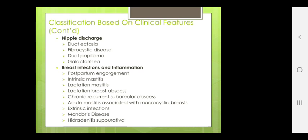Classification based on clinical features also includes nipple discharge and breast infections and inflammation. Nipple discharge may be in duct ectasia, fibrocystic disease, duct papilloma, galactorrhea. Breast infections and inflammation are seen in postpartum engorgement, intrinsic mastitis, lactation mastitis, breast abscess during lactation, chronic recurrent subareolar abscess, acute mastitis associated with macrocystic breast, intrinsic infections, extrinsic infections, Mondor's disease and hidradenitis suppurativa.